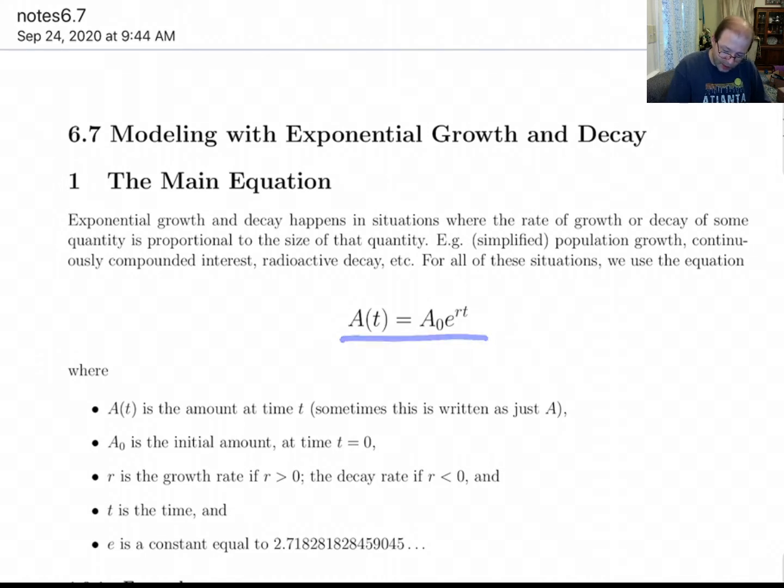A of t equals A sub 0 e to the rt. Now A sub 0, you can read that as A sub 0 or sometimes it's read as A naught. I'll probably call it A naught most of the time. But anyway, this equation gives us what we need.